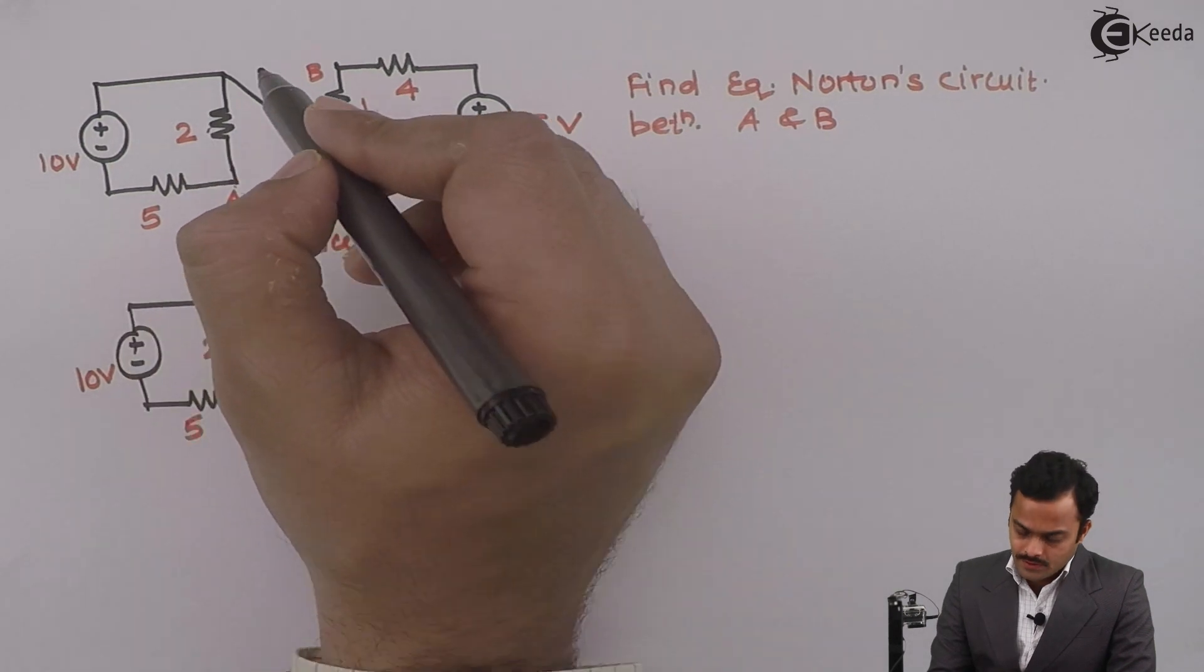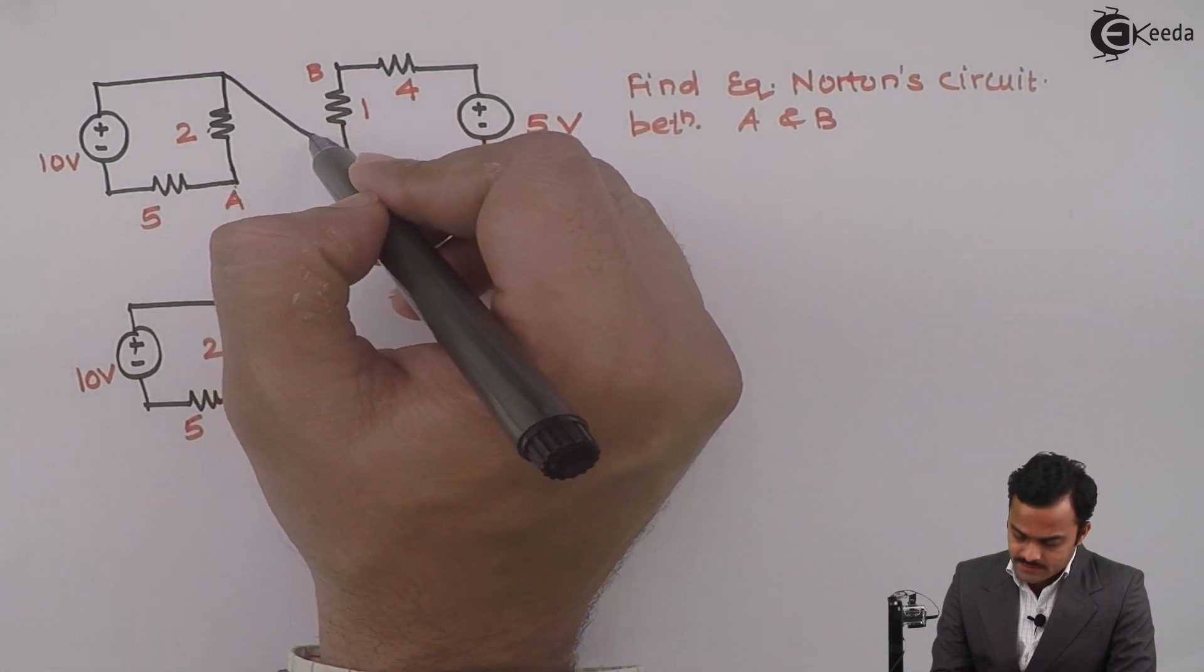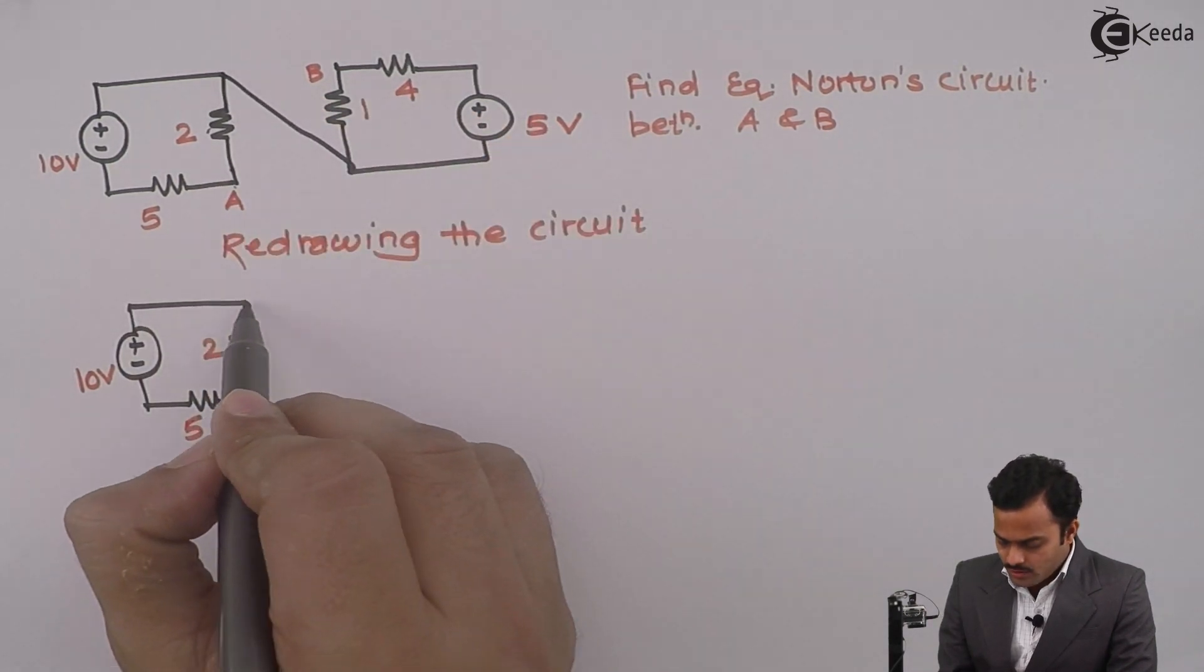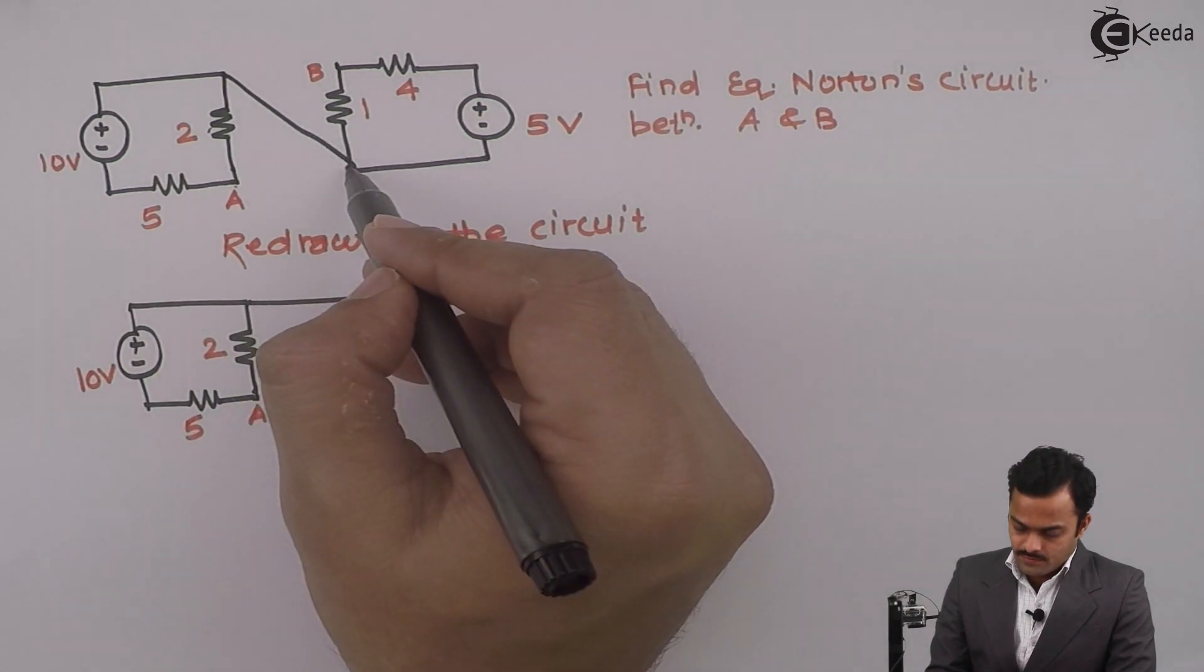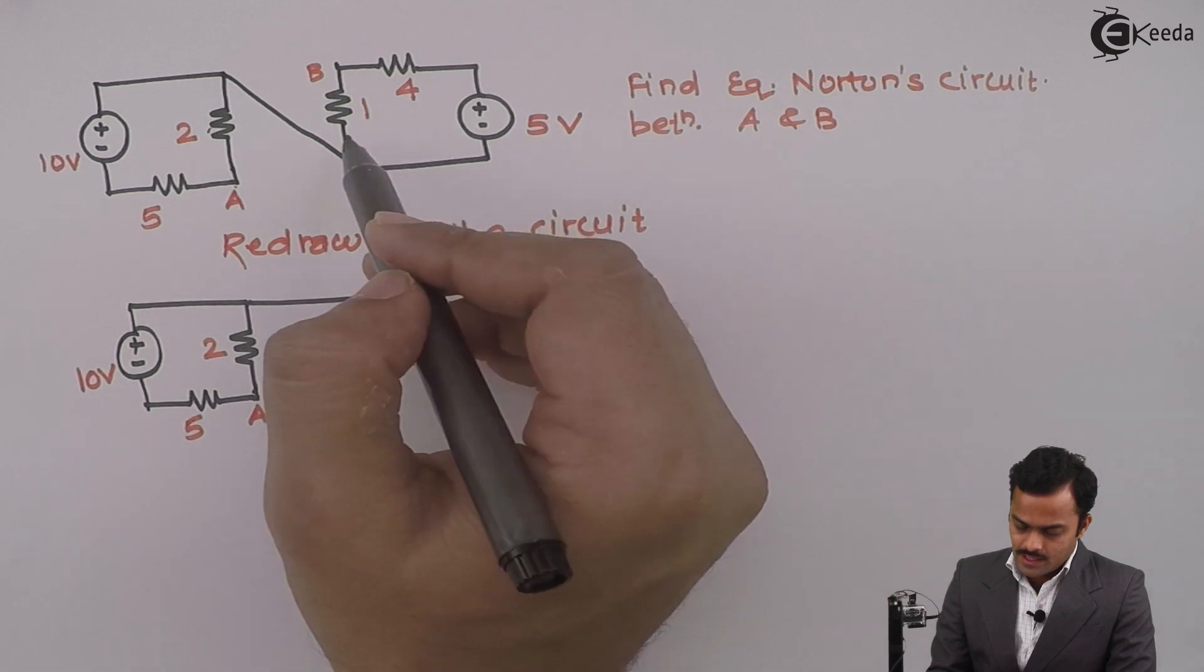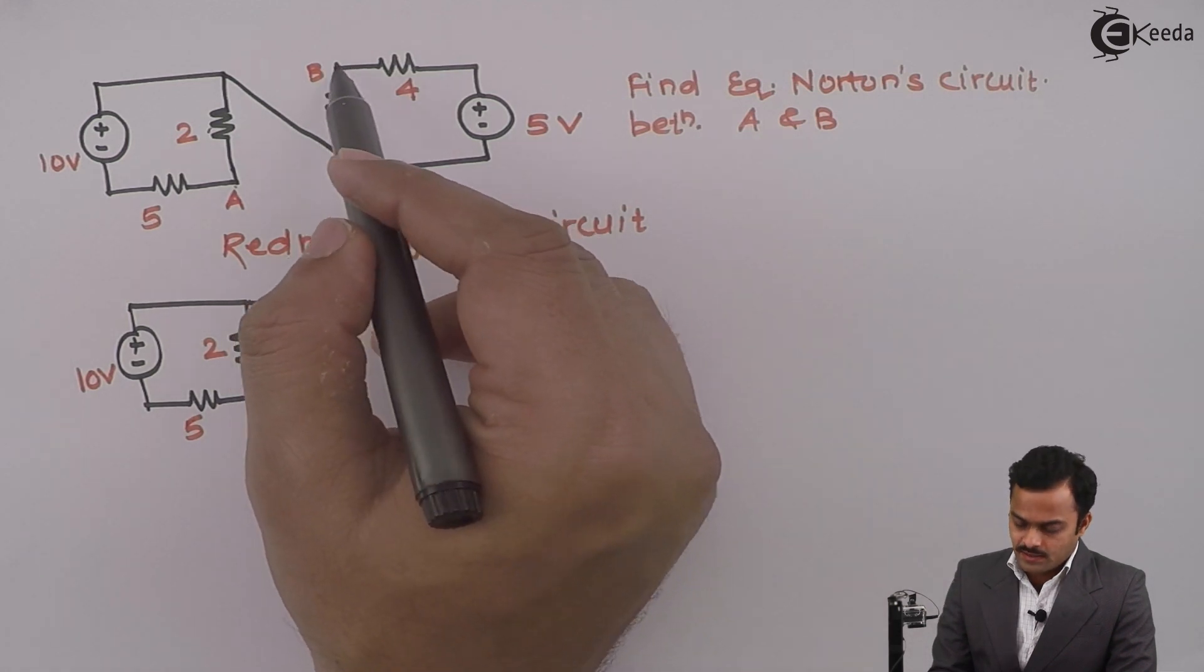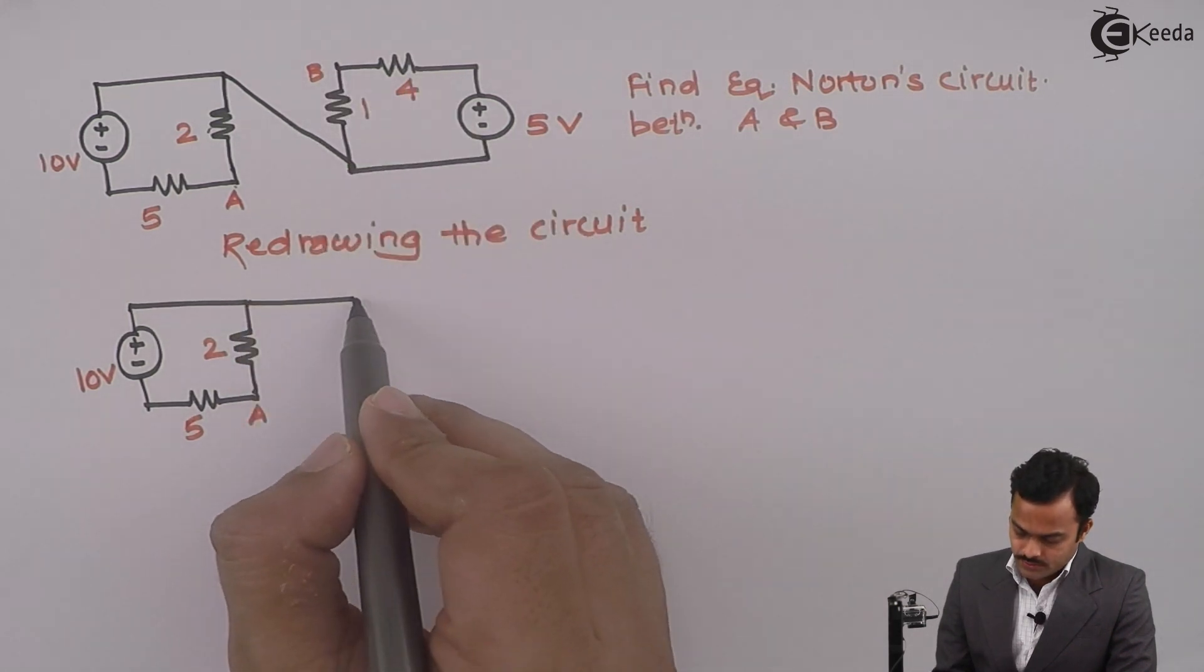From this 2 ohm I will consider this branch and draw it like this. From this point I have 1 ohm resistance connected to B terminal, so it is like this.